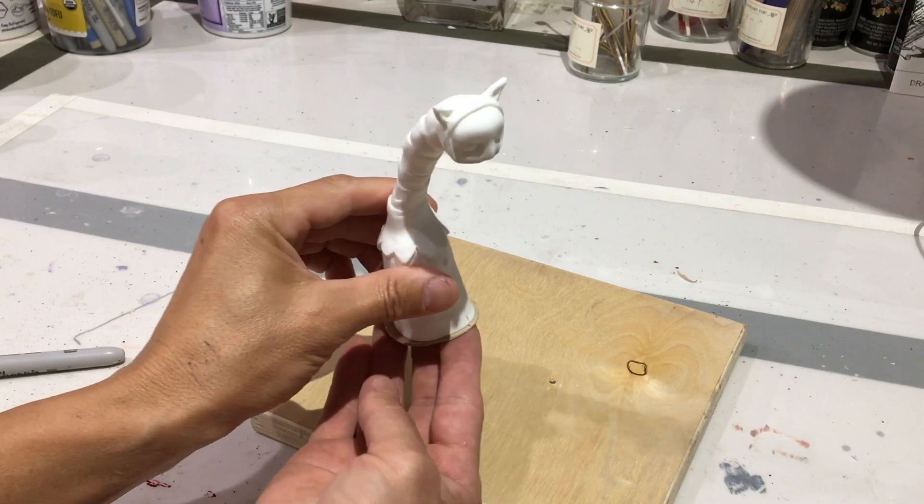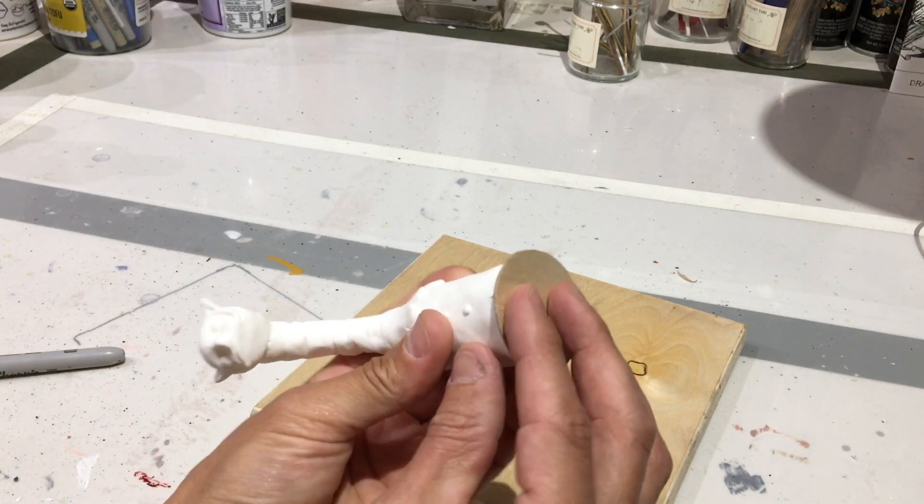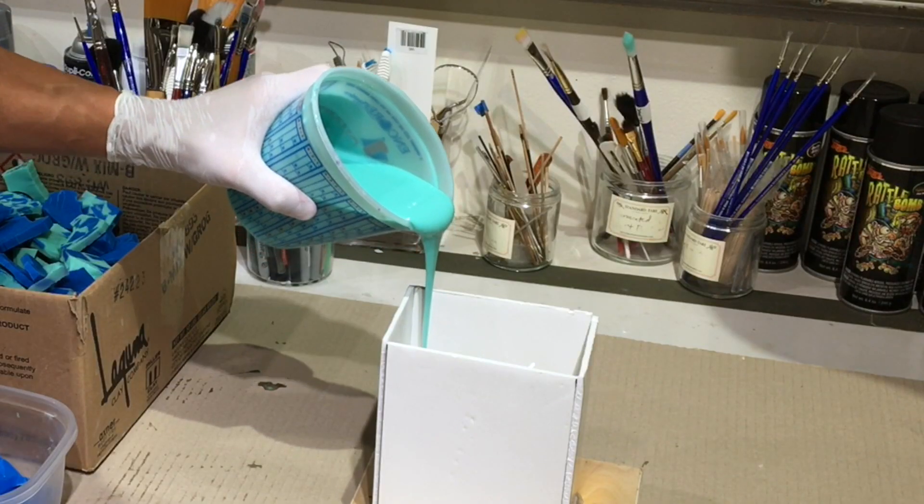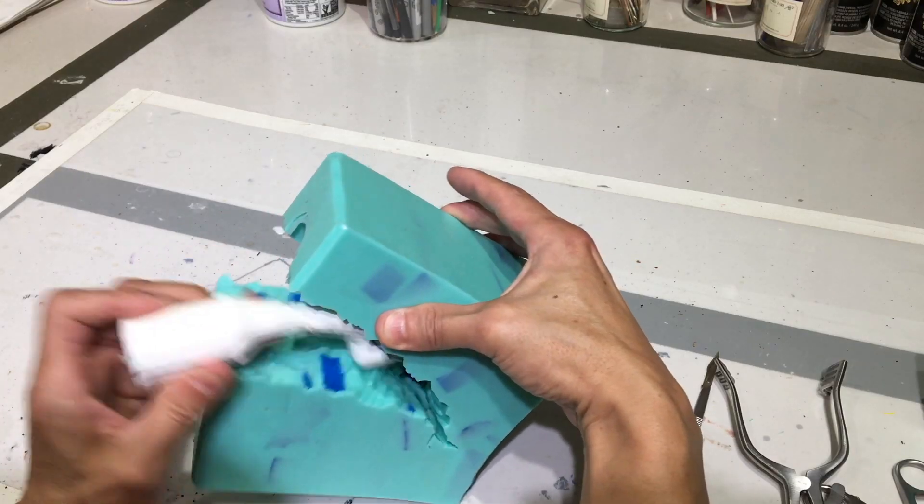So we're taking a mold of this little cast resin figure here. It's a super simple piece, so it's perfect for this type of mold. We're going to make a little mold box for it, pour the silicone, then cut it open and pull the piece out so we can cast resin into the mold.